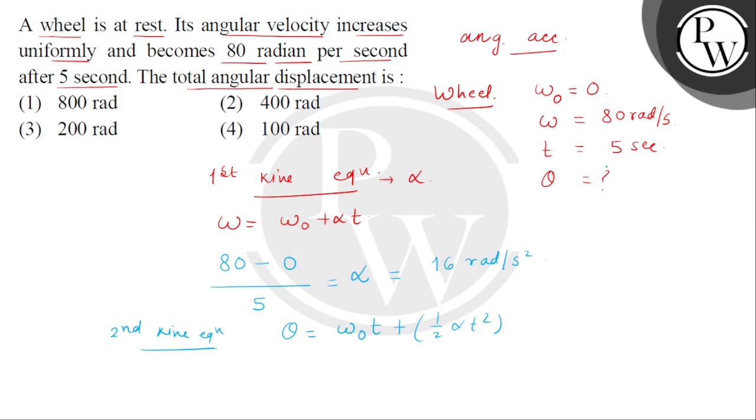Omega naught value is 0, so the first term will be 0 plus half alpha value which is 16, and T value is 5. So T square will be 25. This 2 and 16 will cancel.